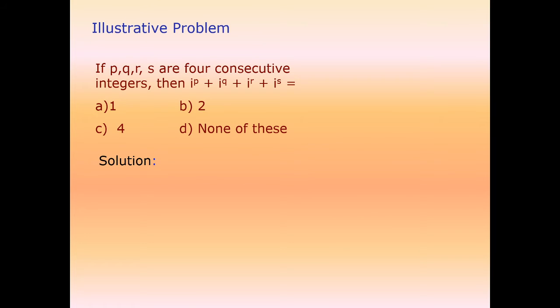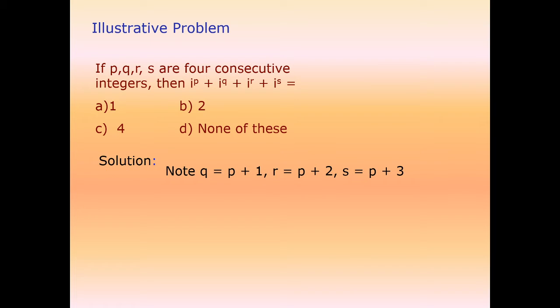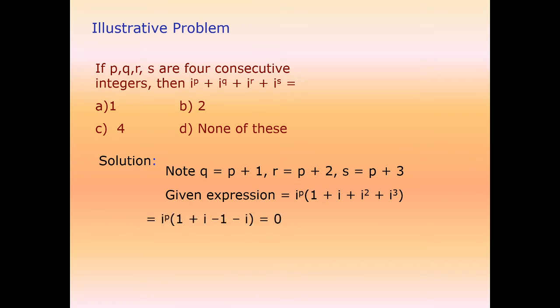If p, q, r, s are four consecutive integers, what is iota^p + iota^q + iota^r + iota^s? Taking q = p+1, r = p+2, s = p+3 and substituting, the answer is 0, since the four consecutive powers of iota always sum to zero.